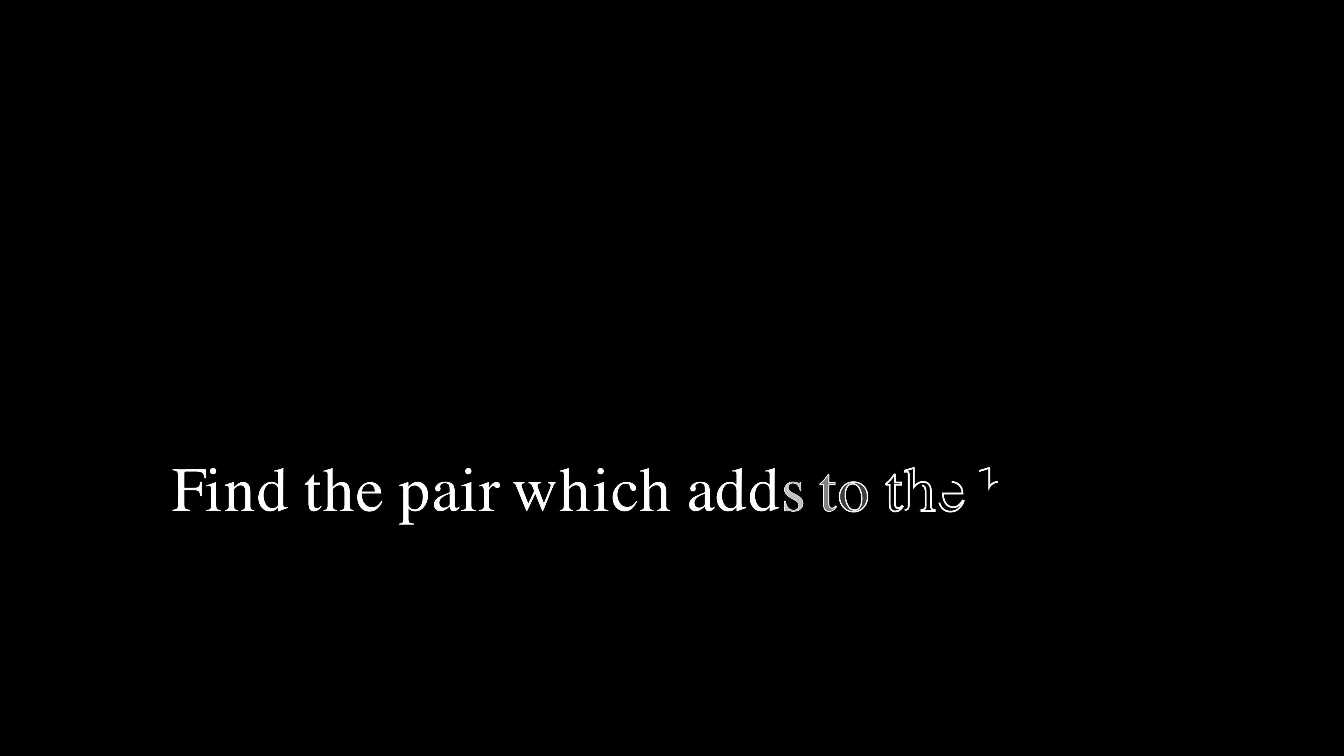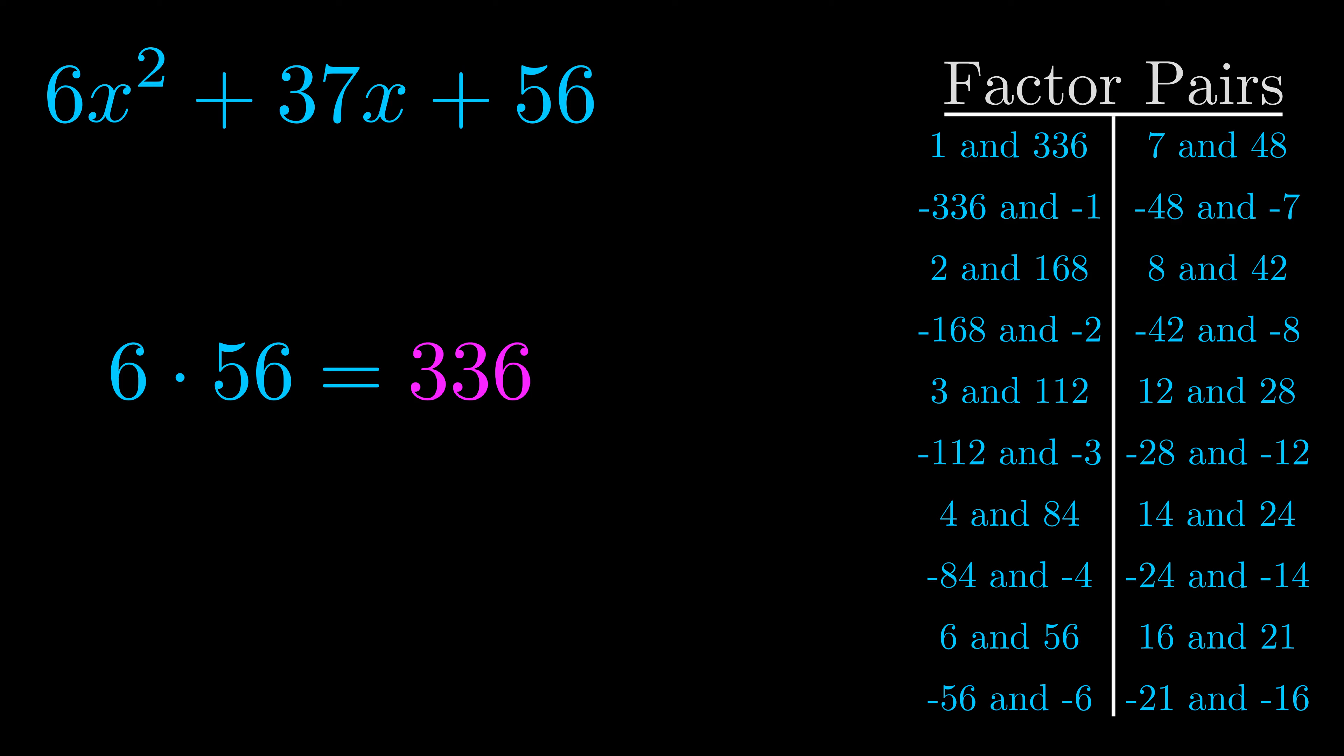The b value is the coefficient on the x term. That's the middle term, the one that we haven't done anything with yet. And really this is the only factor pair that we need.